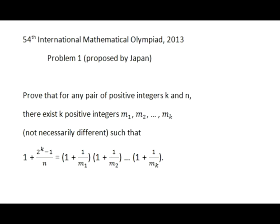International Math Olympiad 2013, problem number one. Prove that for any pair of positive integers k and n, there exist k positive integers m1 through mk, not necessarily different, such that the equality on the screen holds.